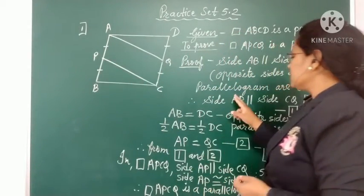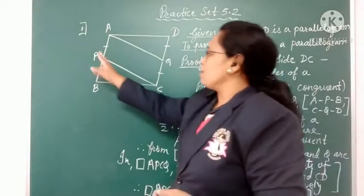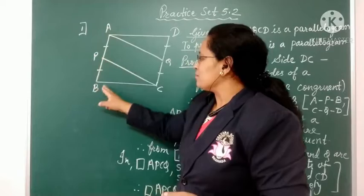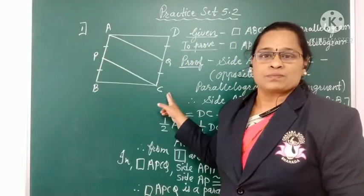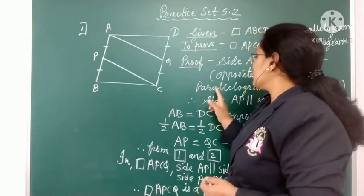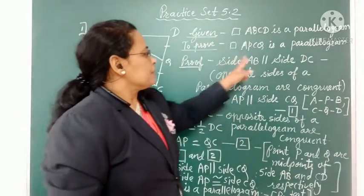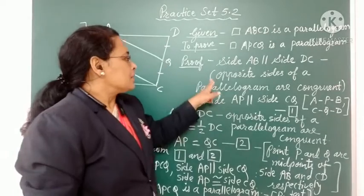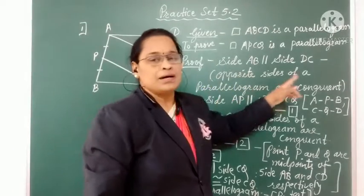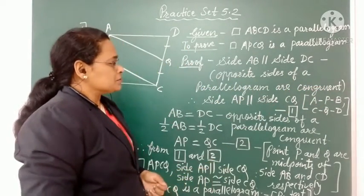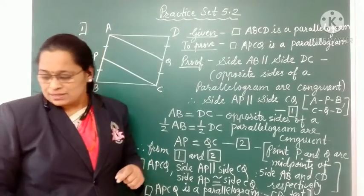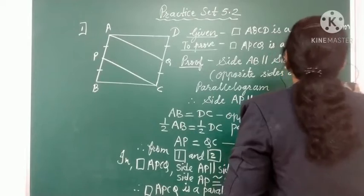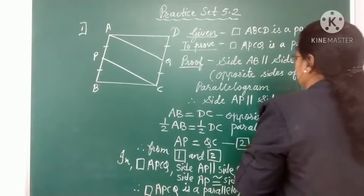We start with the parallel side. A pair of opposite sides is parallel — side AB is parallel to side DC. We write: side AB is parallel to side DC. The reason we write is: opposite sides of a parallelogram are parallel.